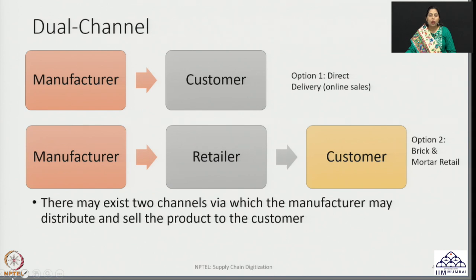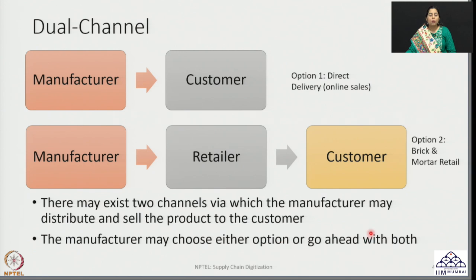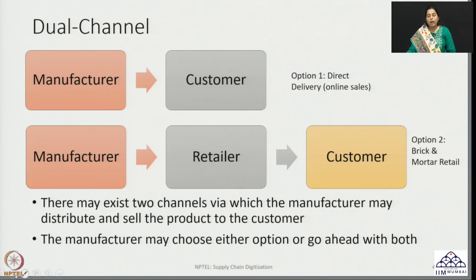The third option available to the manufacturer is to choose both channels as part of their offering — the product would be available to be sold directly to the customer online and also available via a retailer in a brick and mortar system. So how do we make a choice? What is the best option — independent sales through different channels or selling as one particular group? Let us go step by step, understanding each channel one at a time.